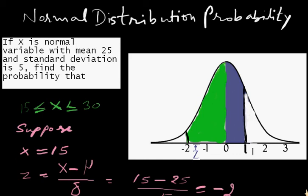We need to calculate the probability of X which is more than or equal to 15 and less than or equal to 30. First, we will make a bell-shaped normal distribution curve.